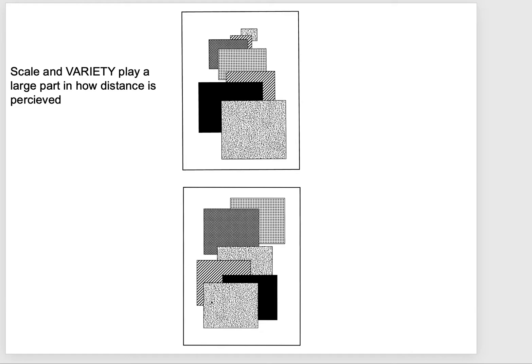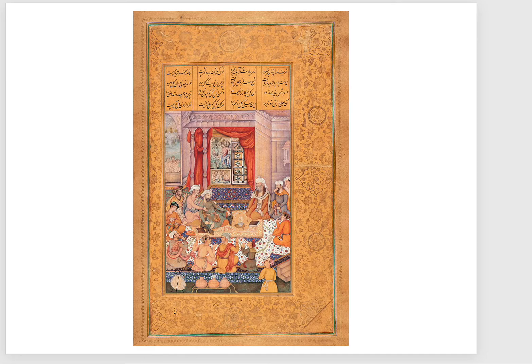Scale and variety also play a large part in how distance is perceived. By variety I mean we have all the same shapes here, but a variety of actual suggestion of tones or textures. This one is much more effective at showcasing space and depth than this one, because there is not a variety in the actual sizes of the blocks themselves. Variety can be the surface description or the tone — meaning the value — but it can also be the scale of the subject itself.